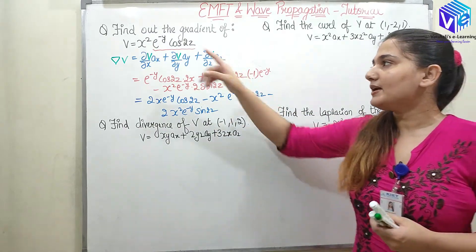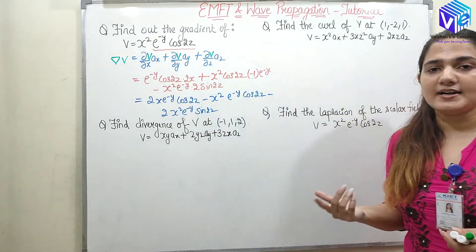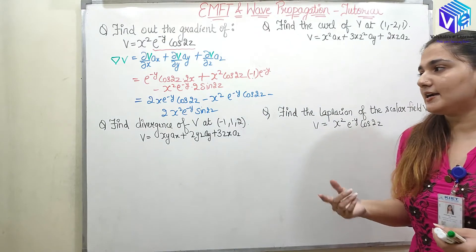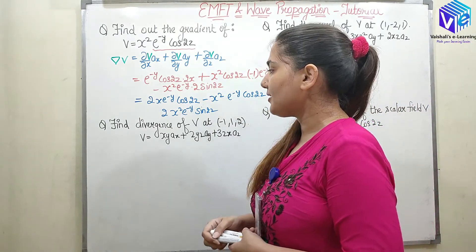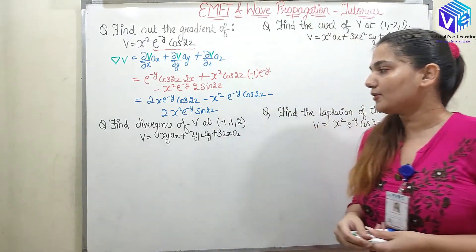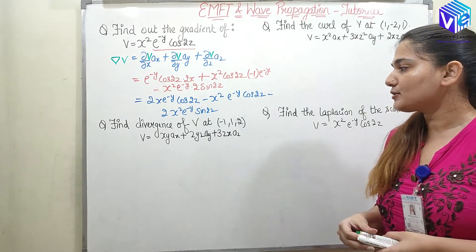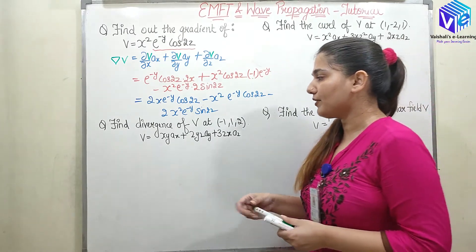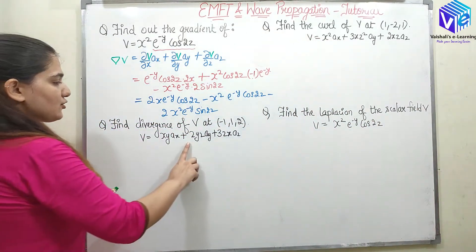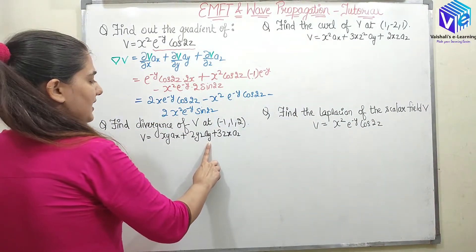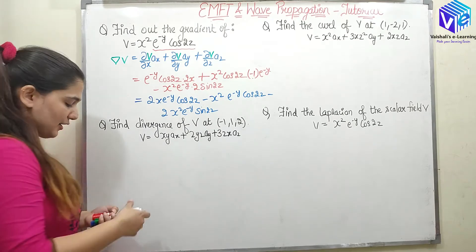Remember: we start with a scalar V and find out the gradient, which results in a vector quantity. Now coming to question number 2: find the divergence of V at point (-1, 1, 2), where V = xy ax + 2yz ay + 3zx az.